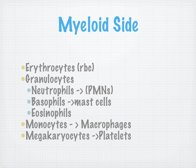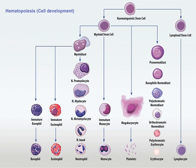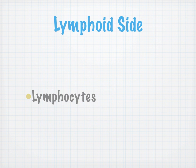On the myeloid side: erythrocytes are your red blood cells; granulocytes include neutrophils, basophils, and eosinophils; monocytes are monocyte-macrophages; and megakaryocytes turn into platelets. A myeloid stem cell goes to an immature monocyte, then to a mature monocyte. The monocyte turns into a macrophage when needed. On the lymphoid side, all we have are lymphocytes.